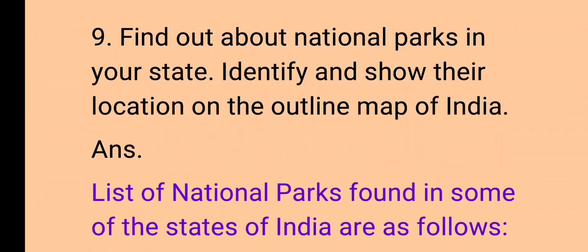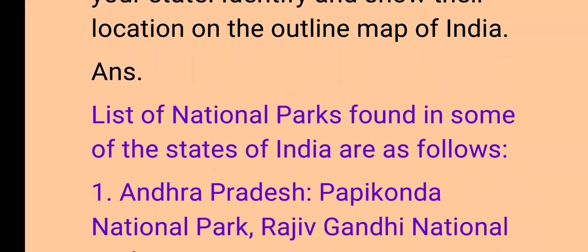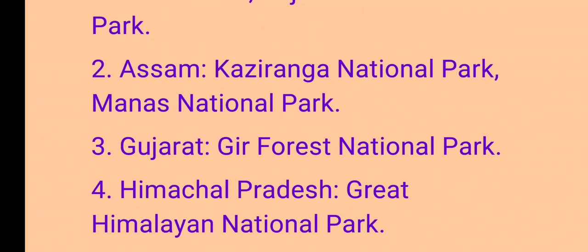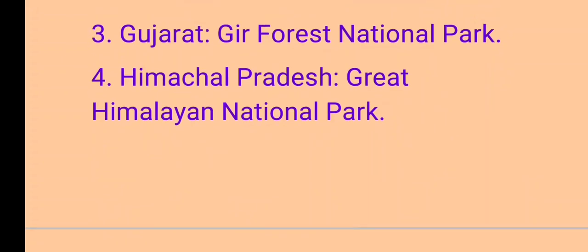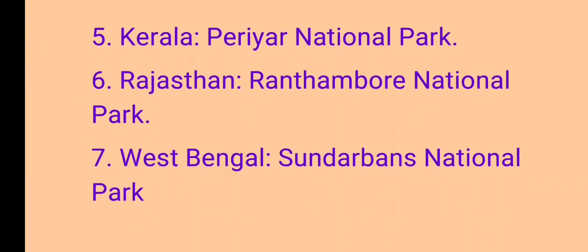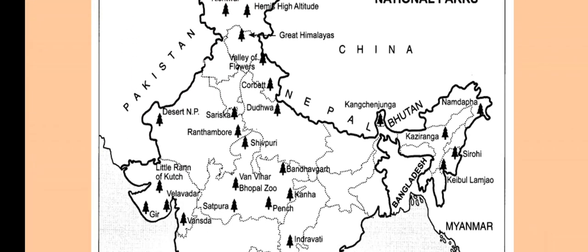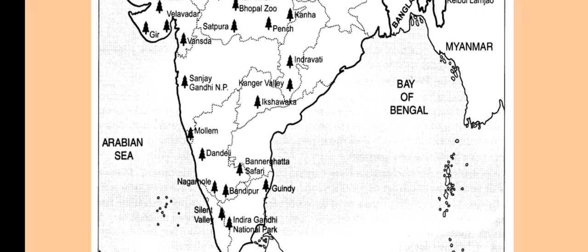Question number 9: Find out about the national parks in your state. National parks according to different states: 1. Andhra Pradesh – Papikonda National Park, Rajiv Gandhi National Park. 2. Assam – Kaziranga National Park, Manas National Park. 3. Gujarat – Gir Forest National Park. 4. Himachal Pradesh – Great Himalayan National Park. 5. Kerala – Periyar National Park. 6. Rajasthan – Ranthambore National Park. 7. West Bengal – Sundarbans National Park. You can mark them on an outline map of India according to your state.